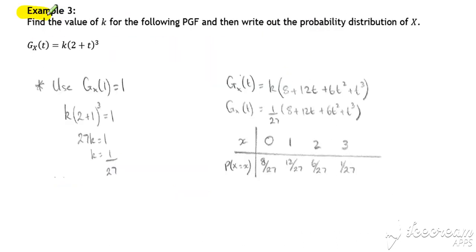For example 3, this time the probability generating function has been defined as in this form. A couple of things here. First of all, we've got an unknown k.